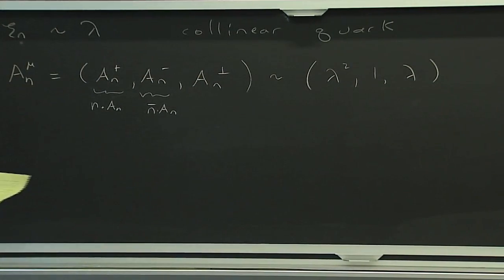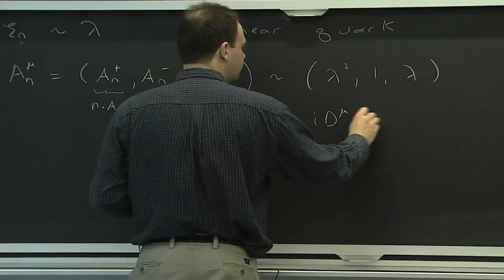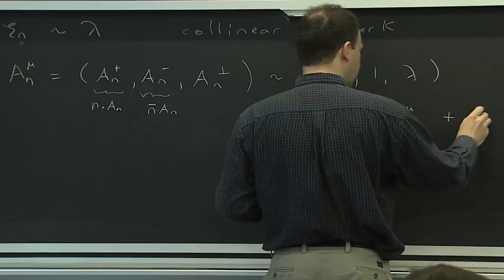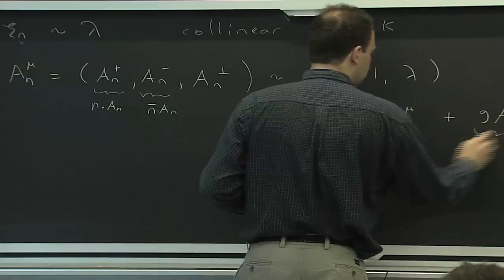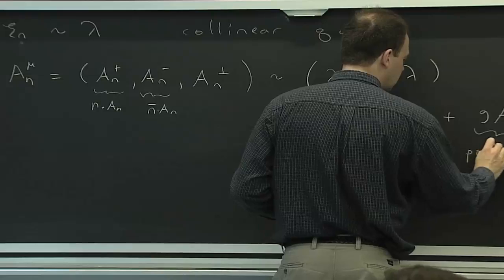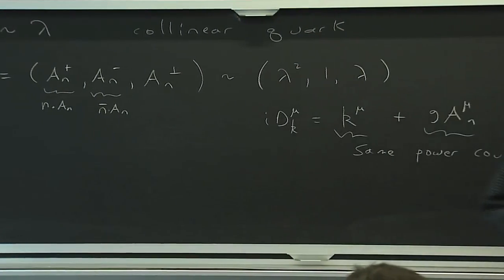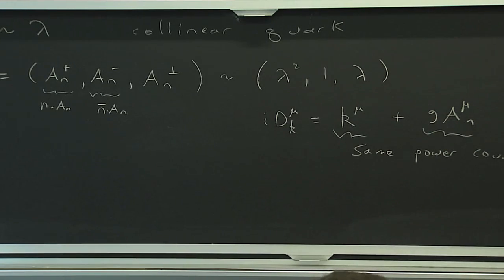We figured out that the scaling for the collinear gluon components is lambda squared, 1, and lambda. And we said that was nice because we could put them together with a derivative and have a covariant derivative, which I wrote in terms of momenta, just to emphasize. These components have the same power counting as the different momentum components. And when we talk about gauge invariance, this fact that they have the same power counting in the different components will be important, because gauge invariance ties momenta to gluons.